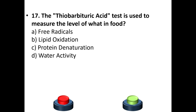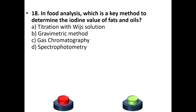Seventeenth question: The thiobarbituric acid (TBA) test is used to measure which level in food? A. Free radicals, B. Lipid oxidation, C. Protein denaturation, D. Water activity. Your answer is option B: Lipid oxidation.